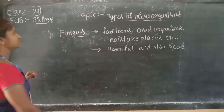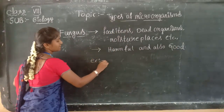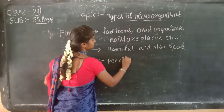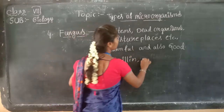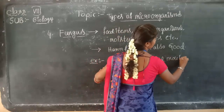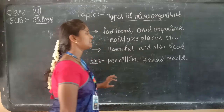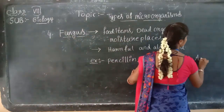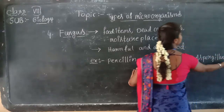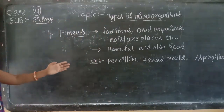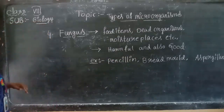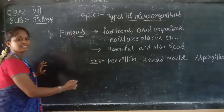What are the examples of fungus? The examples of fungus are Penicillium, bread mold, and Aspergillus. Here I am going to take these three examples under the fungus: Penicillium, bread mold, and Aspergillus. Now I am drawing the Penicillium structure.